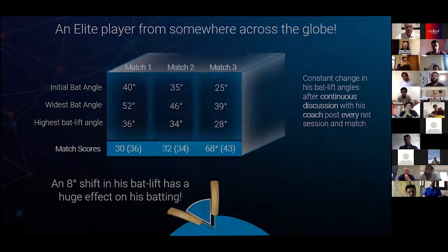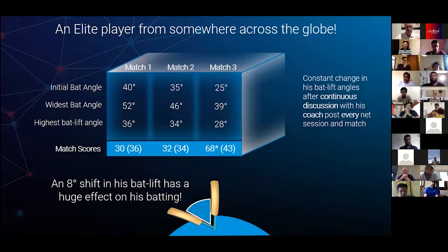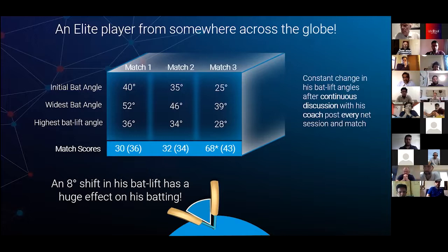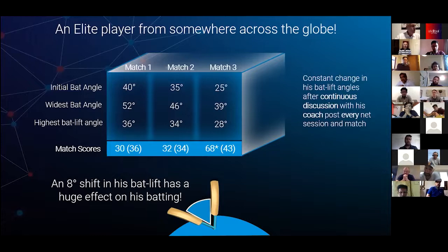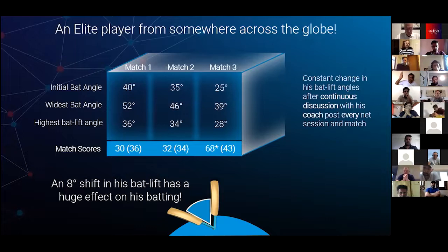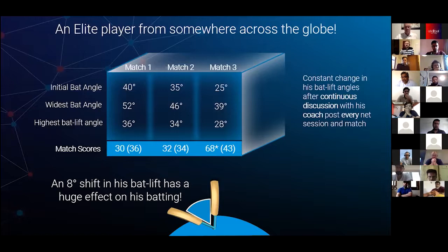In every session we'll share a case study from a player somewhere in the globe — how they used StraightBat to up the ante. The data we get is no longer just for R&D; it can move the needle. This player's back lift angle — the initial width of his back lift and the highest point of the bat — was tracked between multiple matches and practice sessions. He was predominantly an off-side player and, when in form, beautiful to watch.